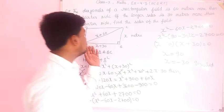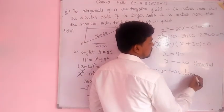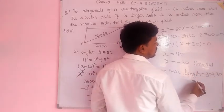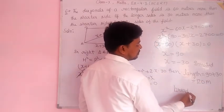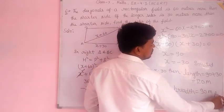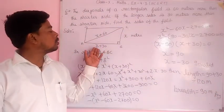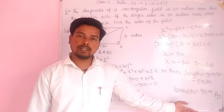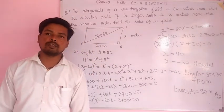So the length of the field equals 90 plus 30 equals 120 meters, and the breadth equals 90 meters. The longer side is 30 meters more than the shorter side. Question number 7 and 8 in the next video.